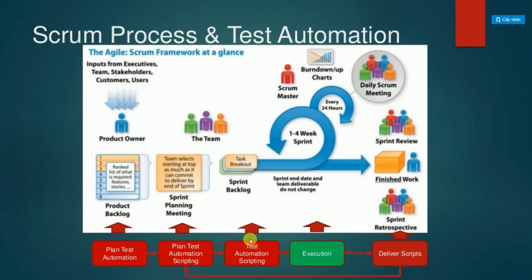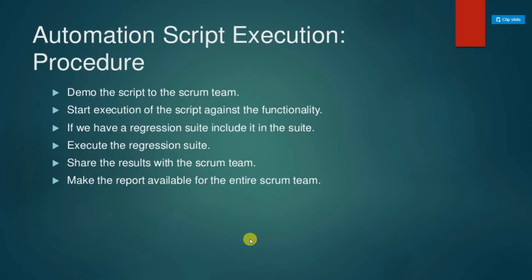Upon finishing scripting within the sprint, execute the test scripts. There should be no failures for the scripts developed in the current sprint. Demo the passing scripts to the scrum team at the end of the sprint — this audience may include the product owner, project manager, QA managers, developers, and quality engineers. Verify that the scripts assert the expected results of the user story.